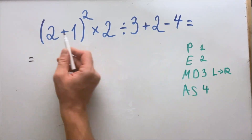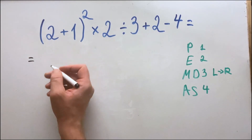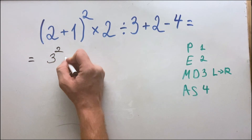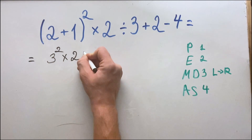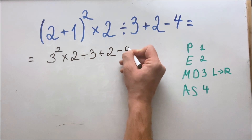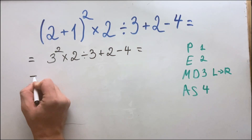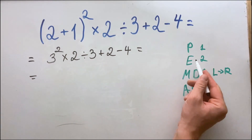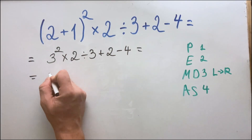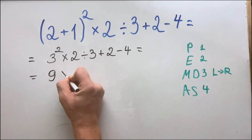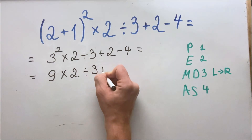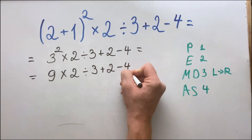First, we do the parenthesis: two plus one equals three. So we now have three squared, multiplied by two, divided by three, plus two, minus four. Next, we do the exponent: three squared equals nine. So we have nine multiplied by two, divided by three, plus two, minus four.